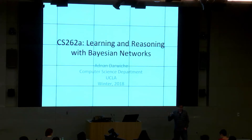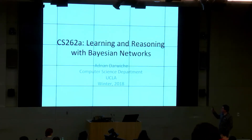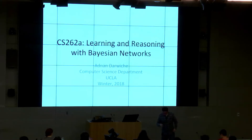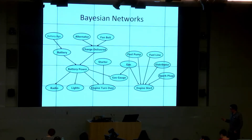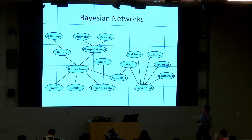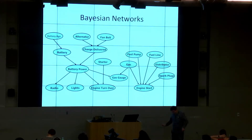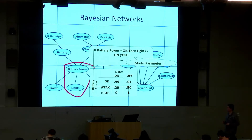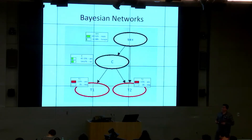Let me start by flashing a few slides for those of you that may not have seen what a Bayesian network is, because that's basically the main subject of this course. Here's one example — a Bayesian network, or a portion of one, from the field of diagnosing electromechanical systems. As you'll see, these are models with a graphical structure. Nodes in the graphs represent variables of interest, and they also have numerical annotations that we'll look at later.